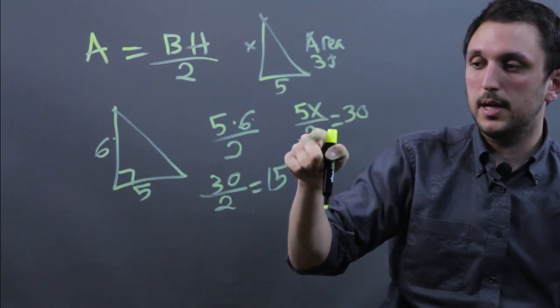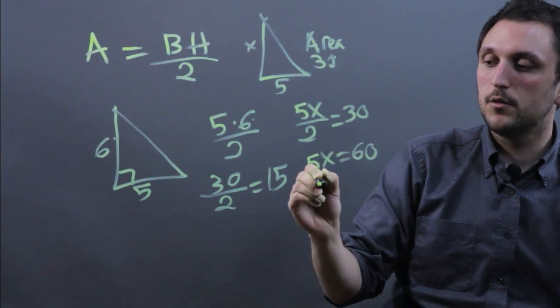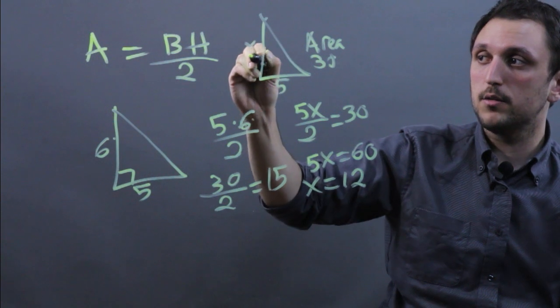So we then multiply each side by 2 and we get 5x equals 60. So x equals 12. That means that this height is 12.